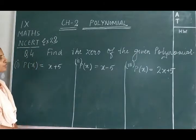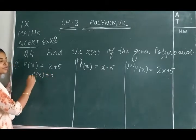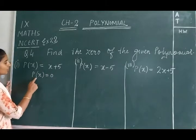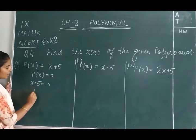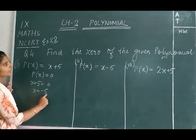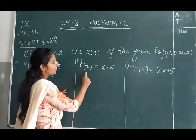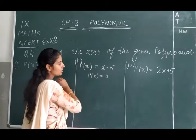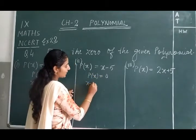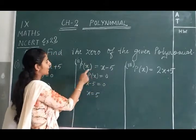Now question number 4: find the zeros of the given polynomial. We set p(x) = 0 and find the values of x. For the first part, p(x) = x + 5: setting x + 5 = 0 gives x = -5, so -5 is the zero. For the second part, p(x) = x - 5: setting x - 5 = 0 gives x = 5, so x = 5 is the zero.